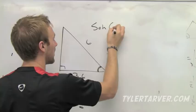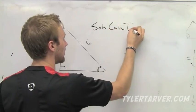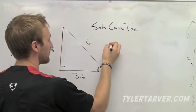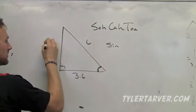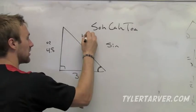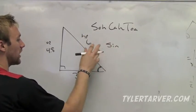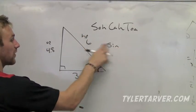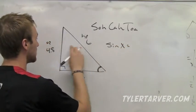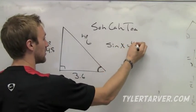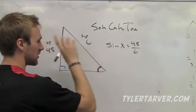So-ca-toa. Sine is opposite over hypotenuse. This is opposite, this is hypotenuse. Now, we do not know the angle measure. I don't know it yet, so I put in x. Equals opposite over hypotenuse, 4.8 over 6.